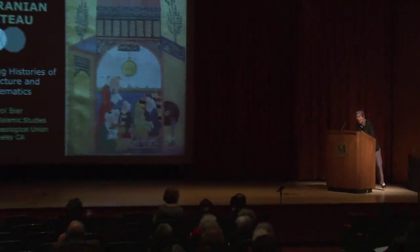Let's turn to our fourth and last paper in this session, by Carol Beer. Carol is a visiting scholar with the Center for Islamic Studies at the Graduate Theological Union, and concurrently a research associate at the Textile Museum in Washington, D.C., where she served as curator for Eastern Hemisphere Collections from 1984 to 2001. She will speak today on overlapping decagons on the Iranian plateau: intersecting histories of architecture and mathematics.